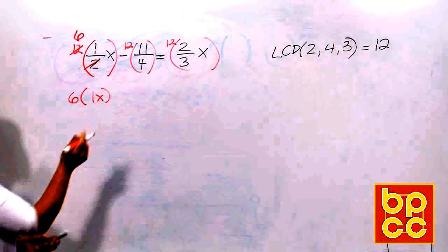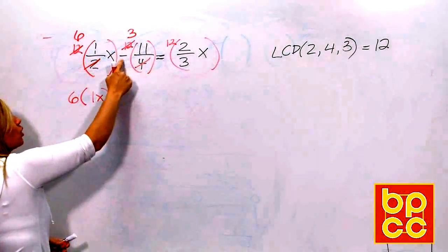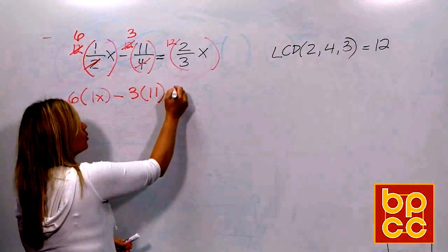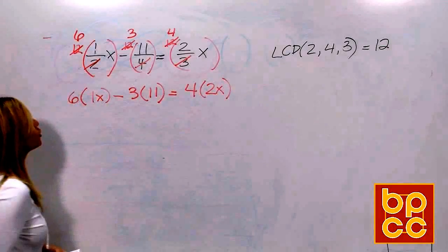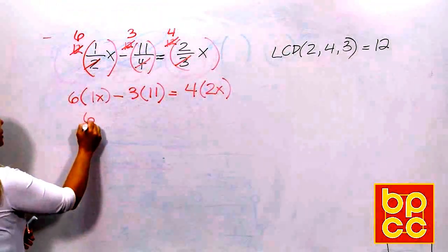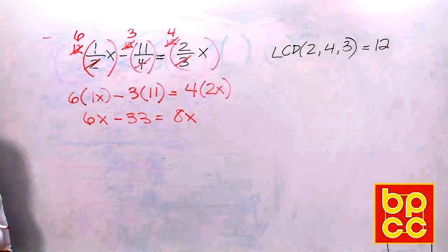If you remember, this was a fraction because 1 cannot divide by 2 and make a whole number. But by putting 12 in the numerator, 12 divides by 2, that gives us 6. So we have 6 now times 1x. No more fractions. 4 divides into 12 3 times, so don't forget your minus, then you have 3 times 11. Bring down your equals. 3 divides into 12 4 times, so you have 4 times 2x. So if you look now, there's no more fractions. This is going to be a nice, simple linear equation. We're going to multiply.